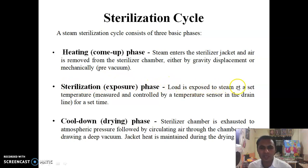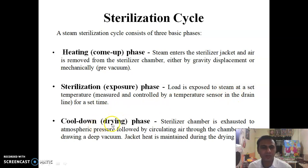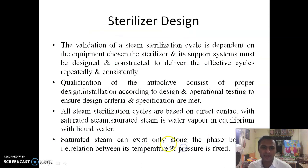During the sterilization phase, the load is exposed to steam at a set temperature, measured and controlled by a temperature sensor in the drain line for a set time. The cool-down and drying phase follows: the sterilizer chamber is exhausted to atmospheric pressure, followed by circulating air through the chamber or by drawing a deep vacuum. Jacket heat is maintained during the drying phase.